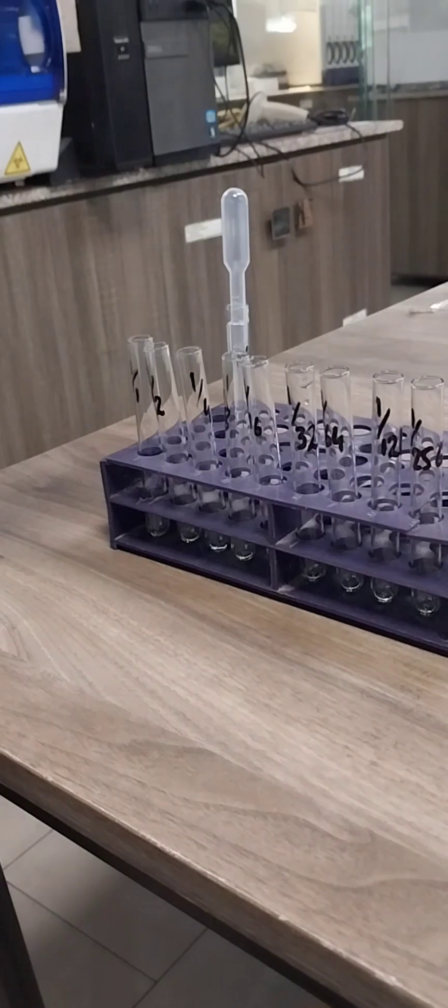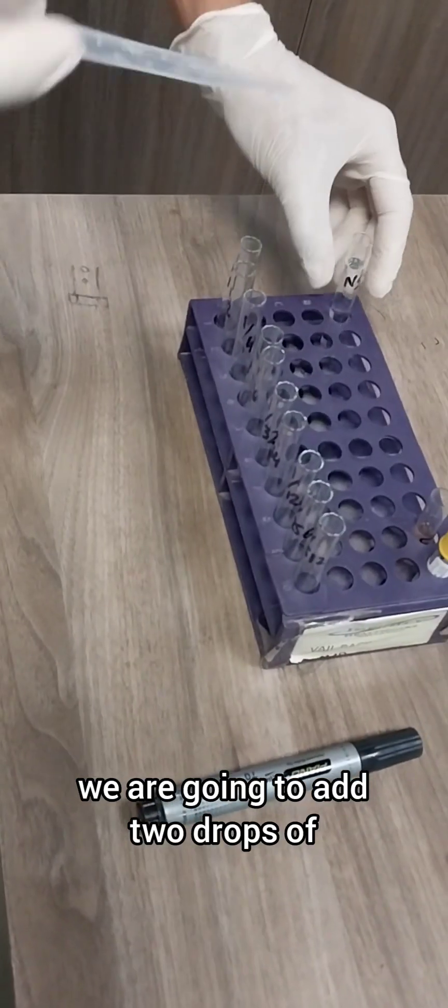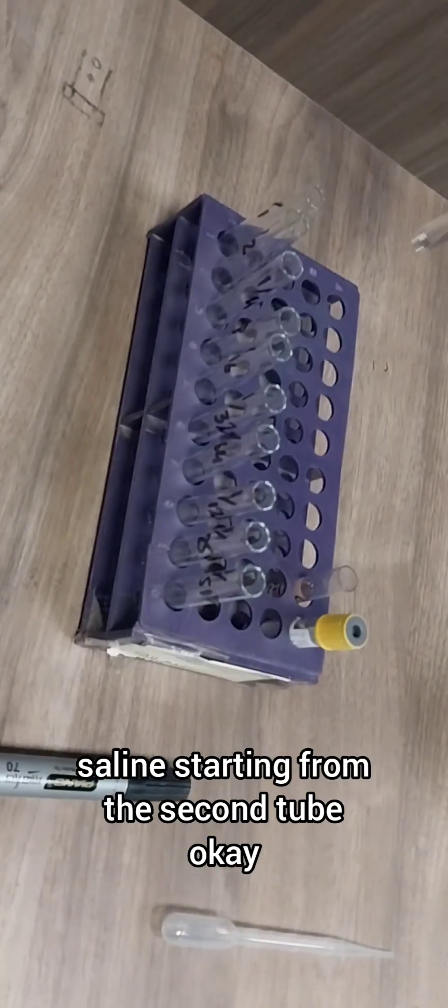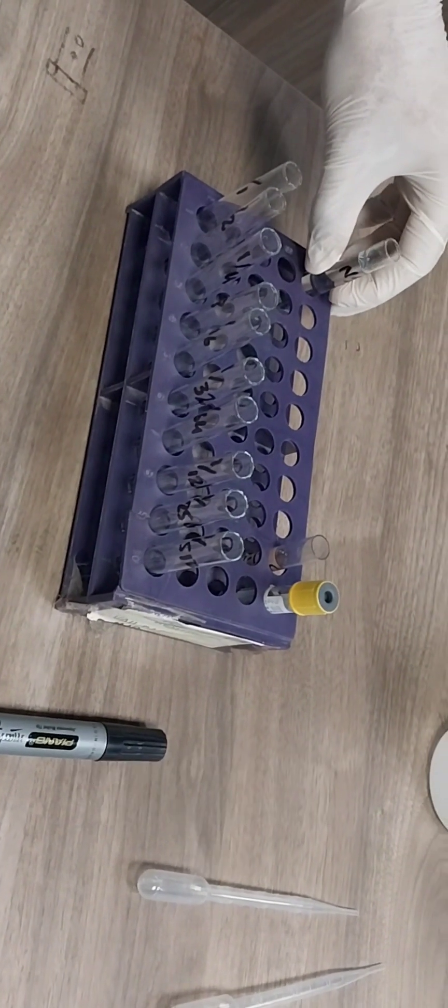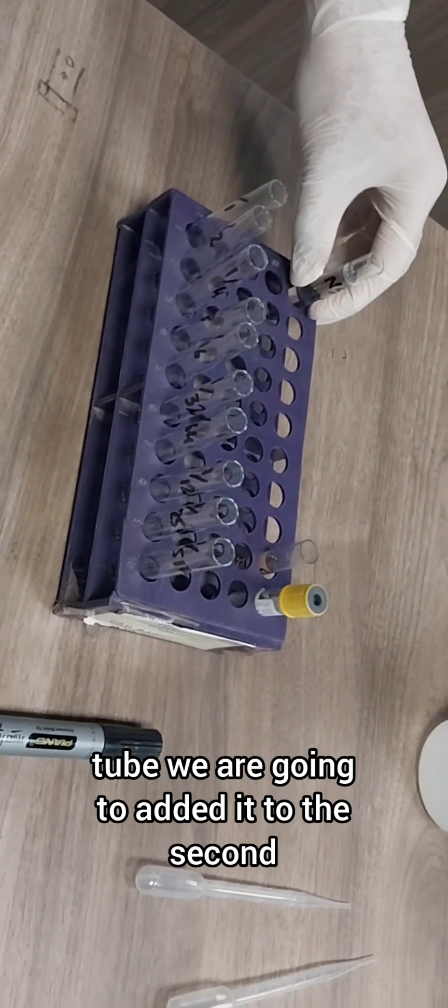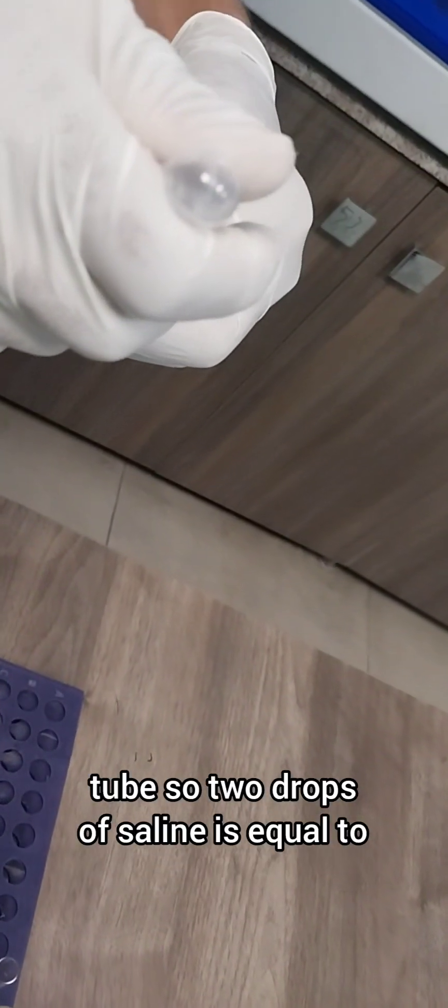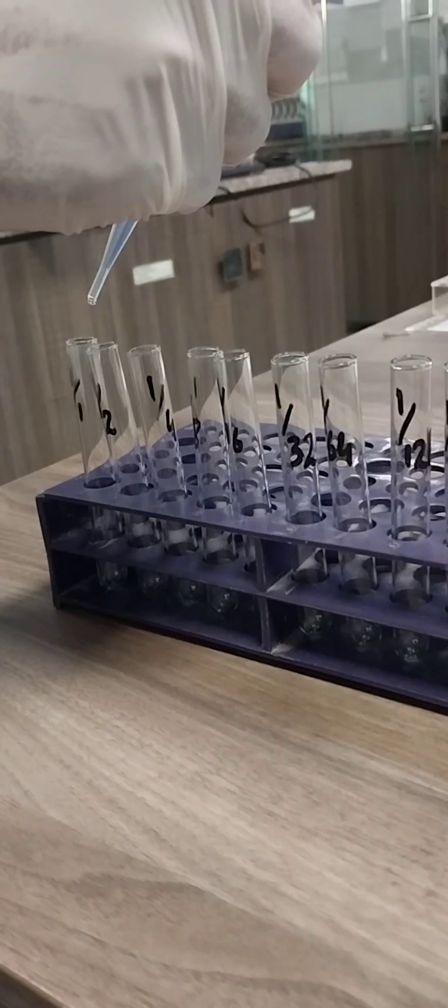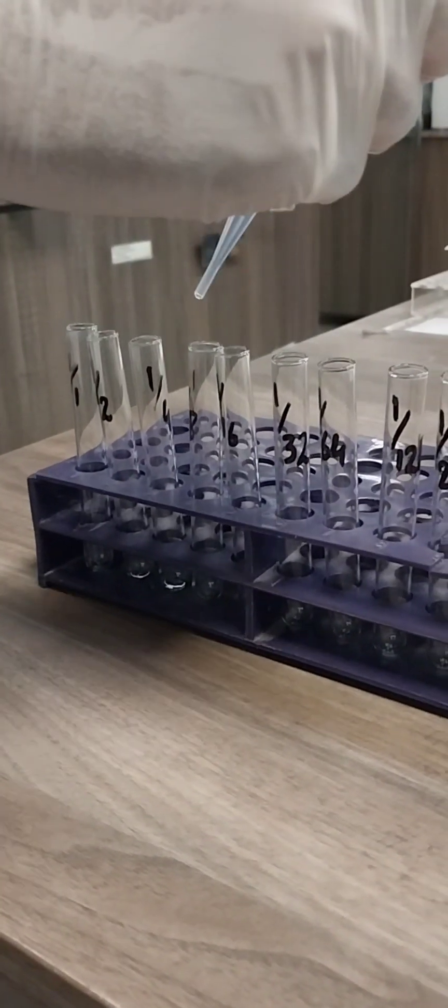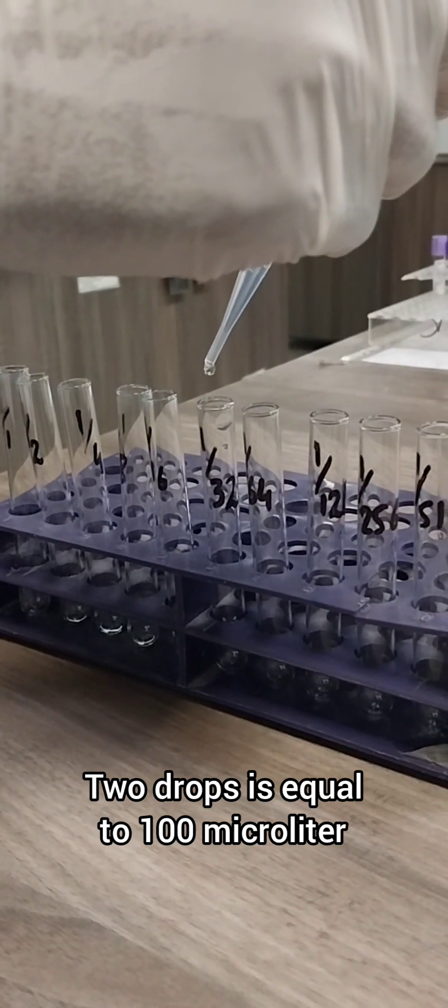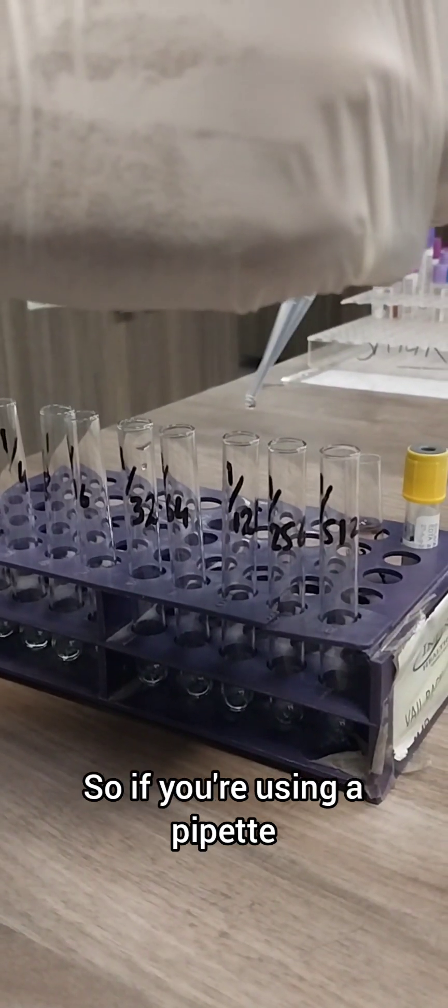The first step is adding normal saline to all of the tubes. We are going to add two drops of saline starting from the second tube. We are not going to add saline to the first tube. Two drops of saline is equal to a hundred microliters of normal saline.